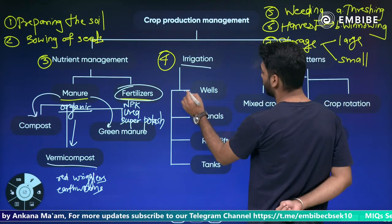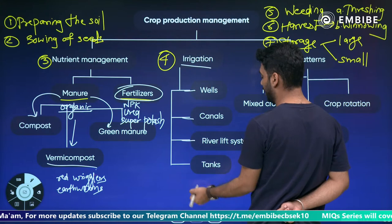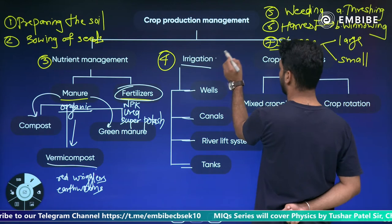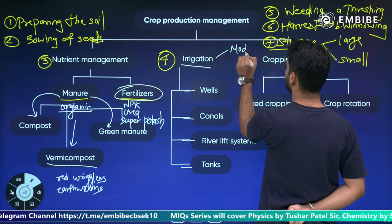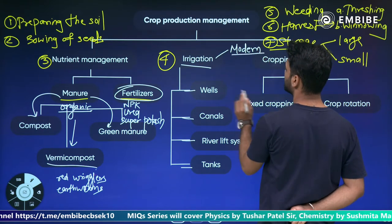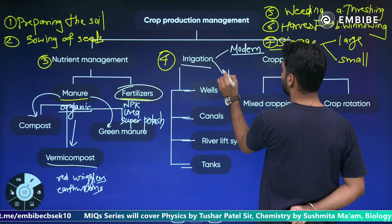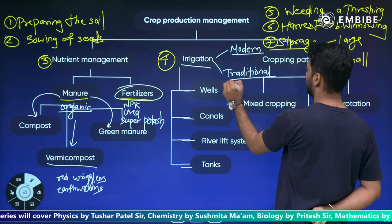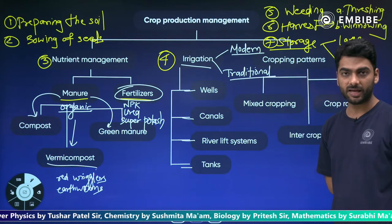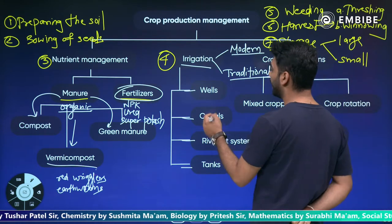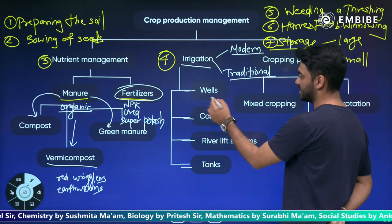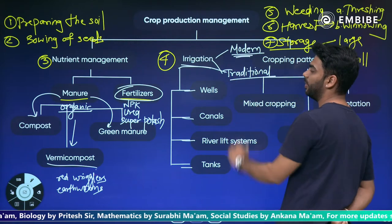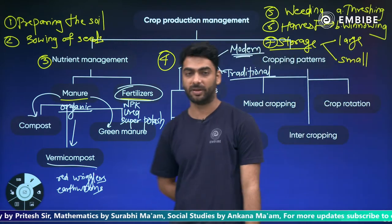Irrigation means artificial supply of water to the plant at regular intervals. This can be done using wells, canals, river lift systems, and tanks. There are two methods: traditional methods — moat, dhekli, rahat, and chain pump — and modern methods — drip and sprinkler irrigation.